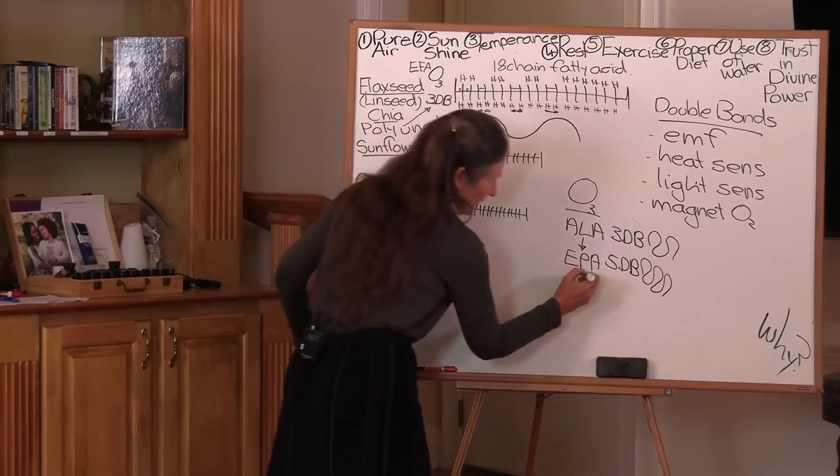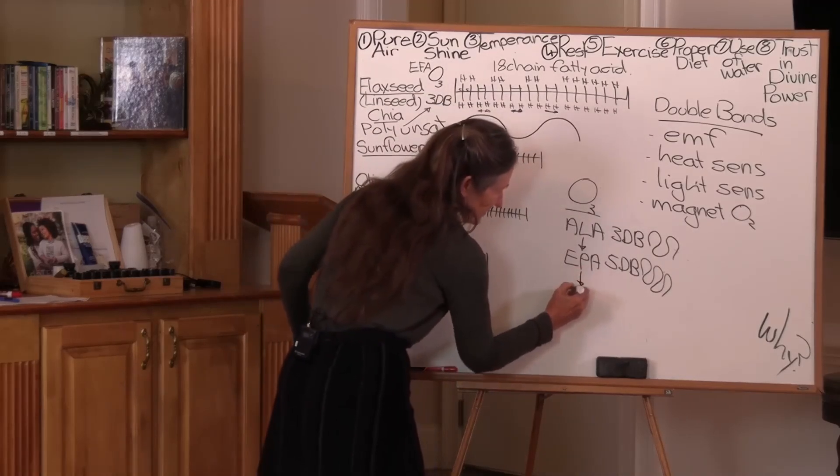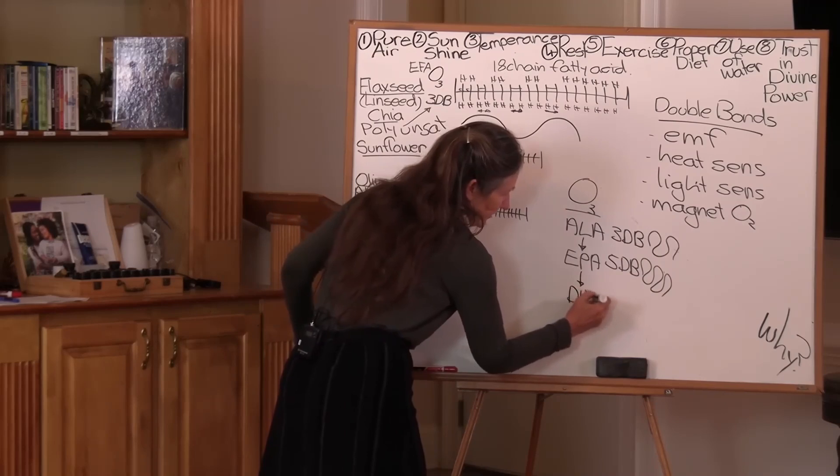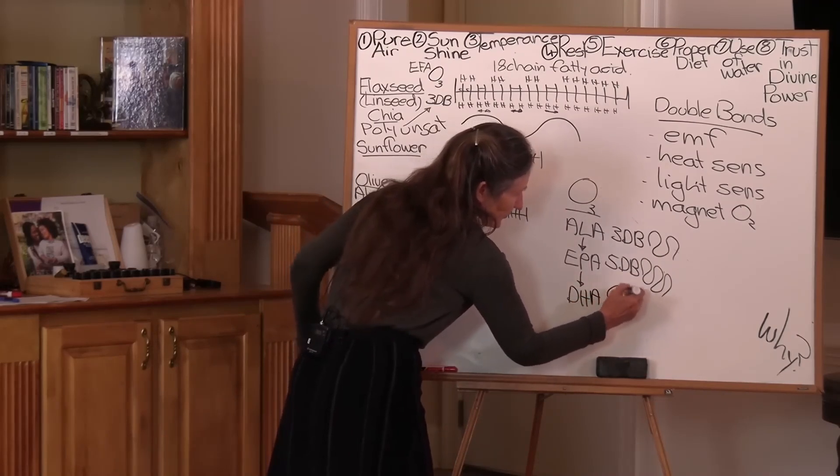It's even more fluid. In the body, EPA is converted to DHA, decohexaenoic acid, and it has six double bonds.